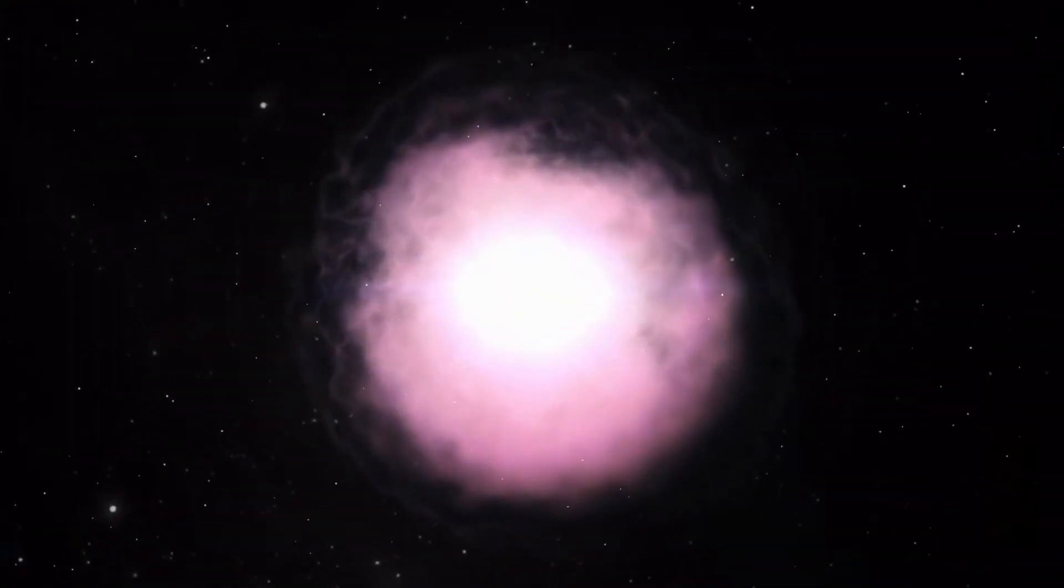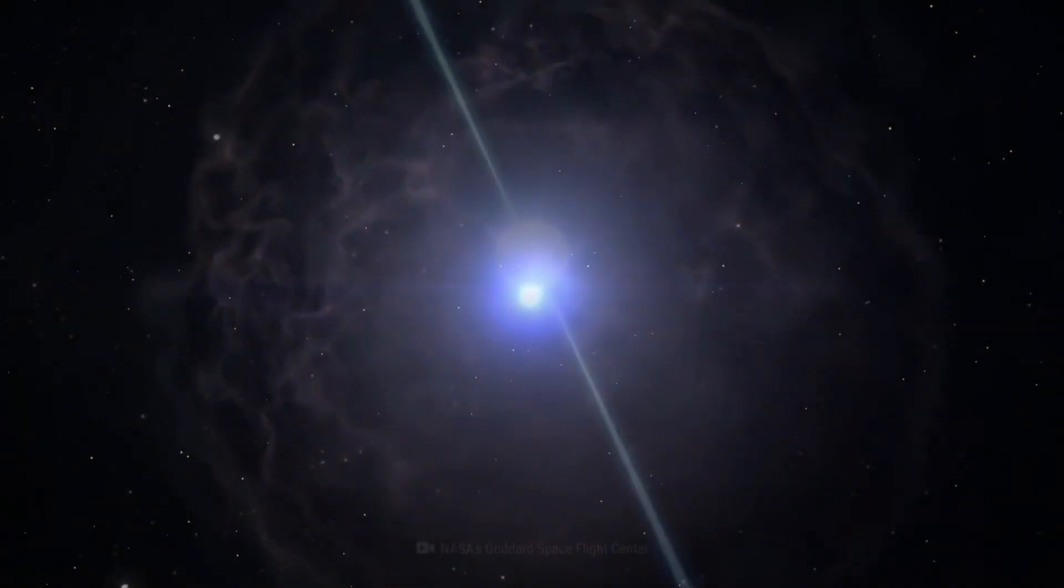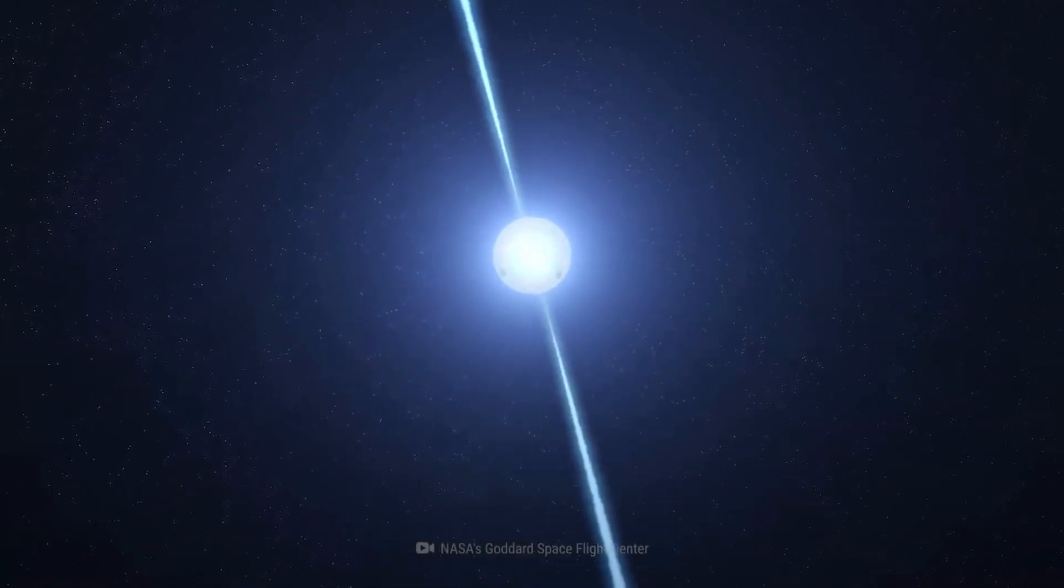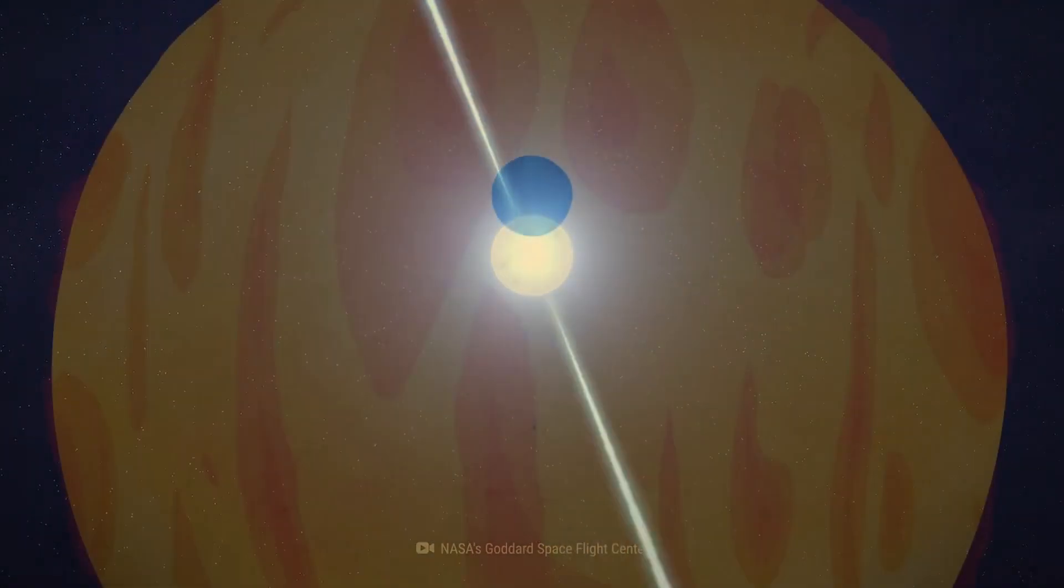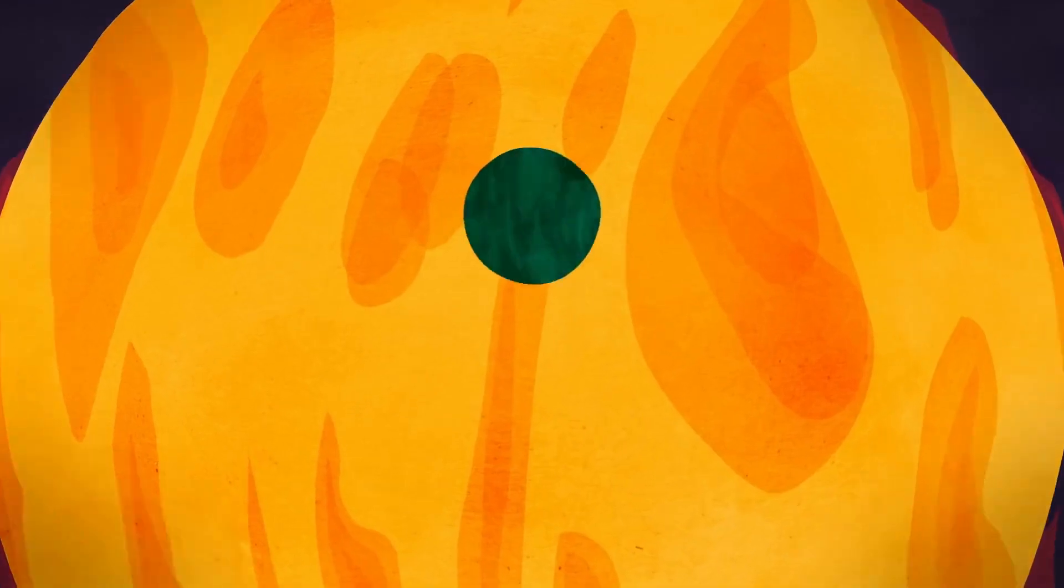All these facts are impressive. New neutron stars can spin hundreds of times per second. The fastest known neutron star completes a mind-boggling 716 rotations every second. Its surface speed nears a staggering quarter of the speed of light.